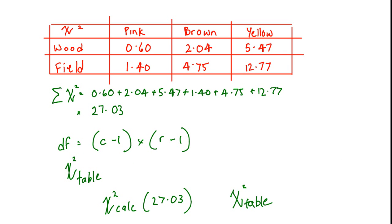Over on this page, I've worked out the chi-squared values for each cell. 0.6 from the previous table and then the values for the other cells. So all we need to do is add those up to get the overall chi-squared value, 27.03.